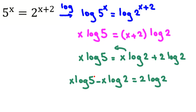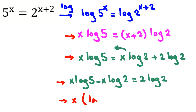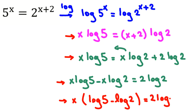If we factor x from the left-hand side, it becomes x times (log 5 minus log 2) equal to 2 log 2.